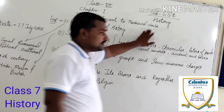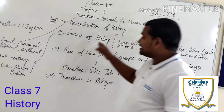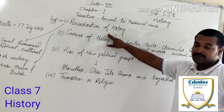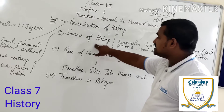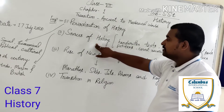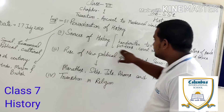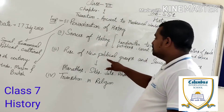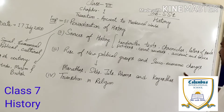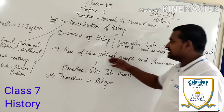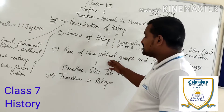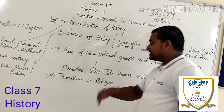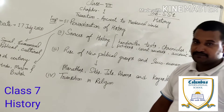In this chapter, I have made some important notes for you which you can see on the board. The first topic is periodization of history. The second topic is sources of history — what are the sources of history, explained in detail. The next topic is rise of new political groups and socio-economic challenges. The fourth topic is transition in religion.